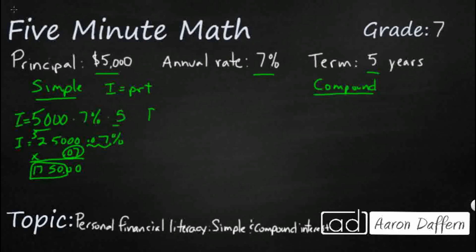So if I add my principal of $5,000 — that's what I started with — after 5 years I'm going to get interest of $1,750. That's going to give me $6,750 after 5 years. It's a pretty good deal — let something sit in there for 5 years and you get an extra $1,750.